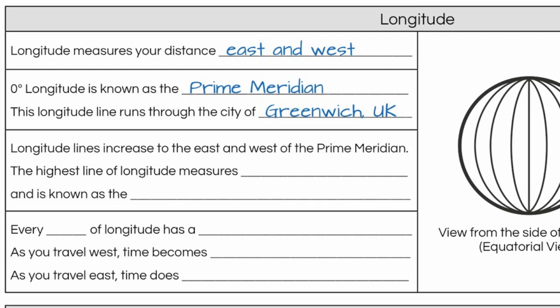So our lines of longitude are going to tell us how far to the east or west we are of the prime meridian. Longitude lines increase to the east and west of the prime meridian, and the highest line of longitude is going to be 180 degrees.